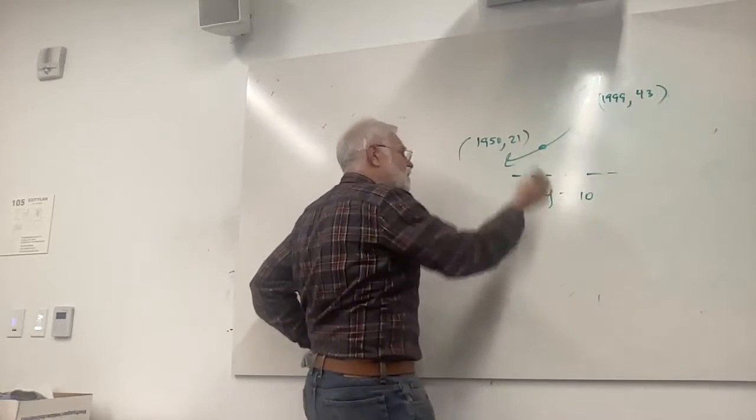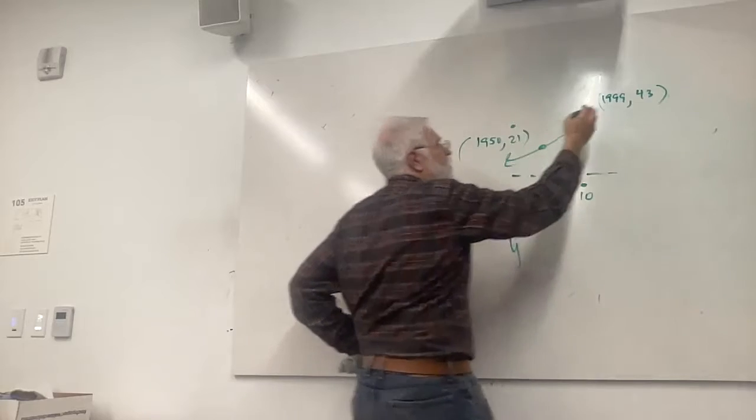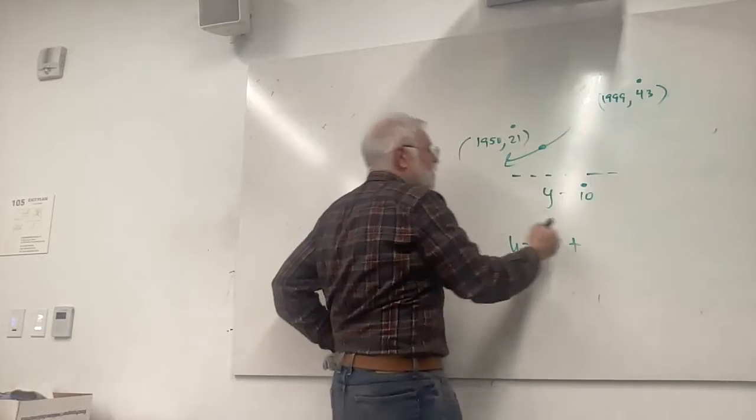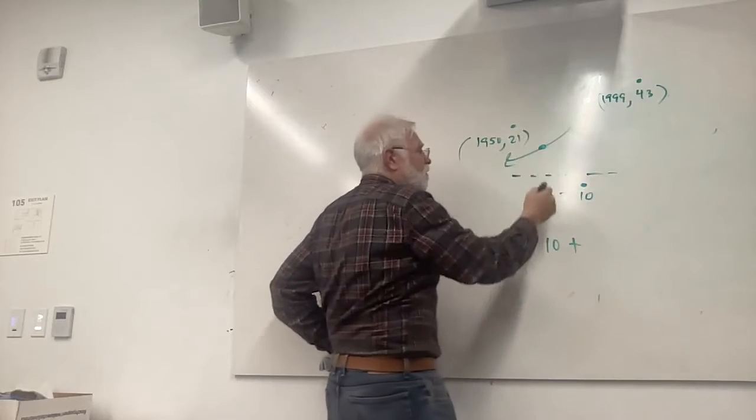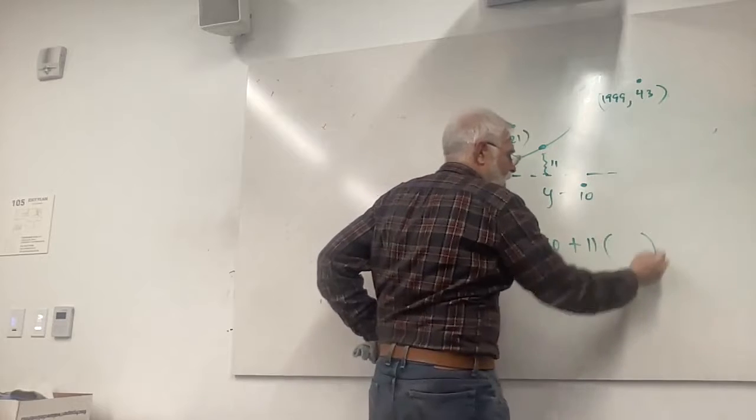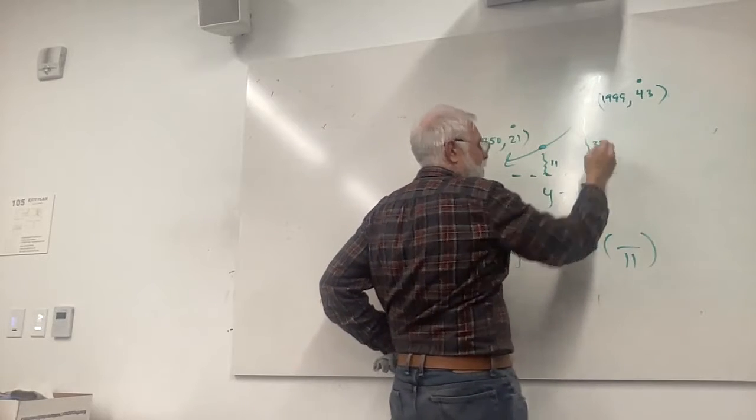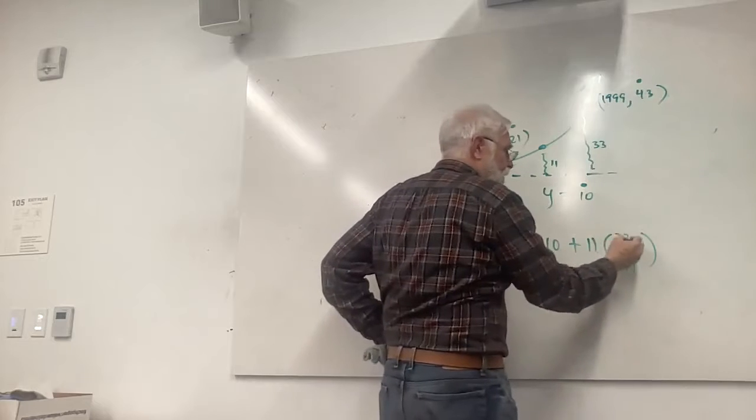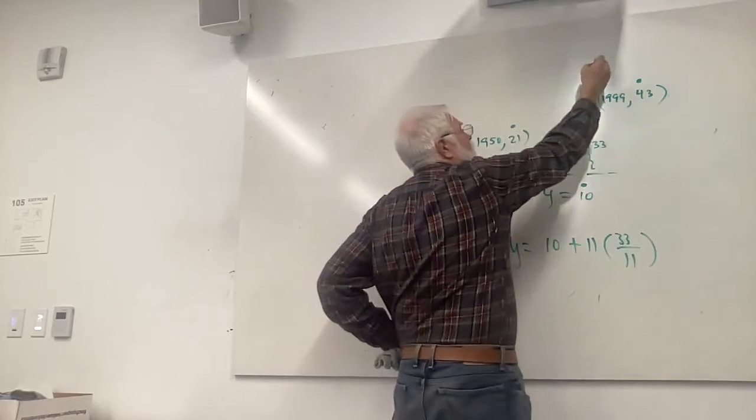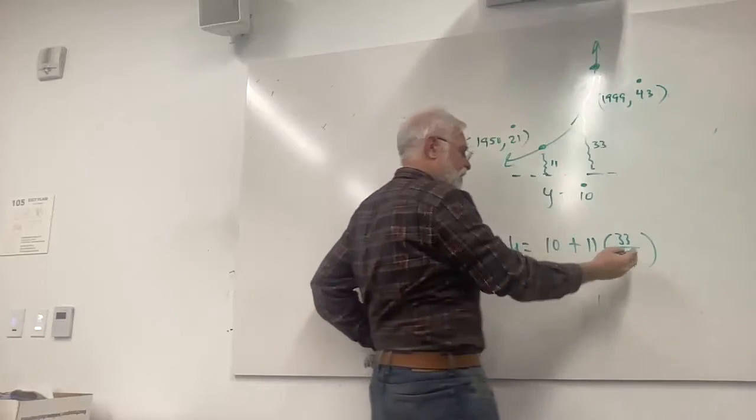So I'm just going to talk very quickly and you get to stop the video and try each one yourself first. Let's start with y equals 10. 1950, something bigger than 10, how about 21? And over here, 1999, let's go to 43. So how do you write this equation? First thing you do is identify the three y values.